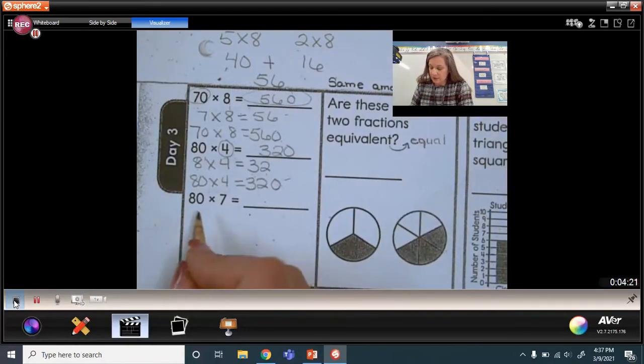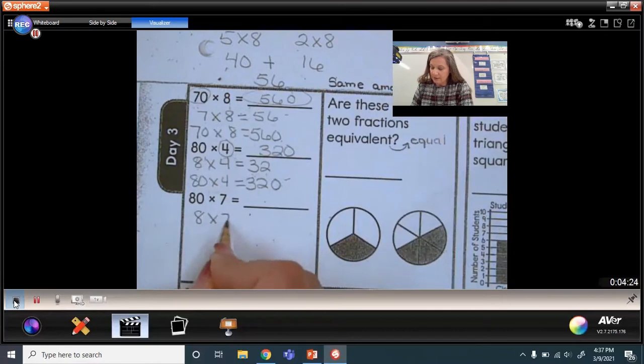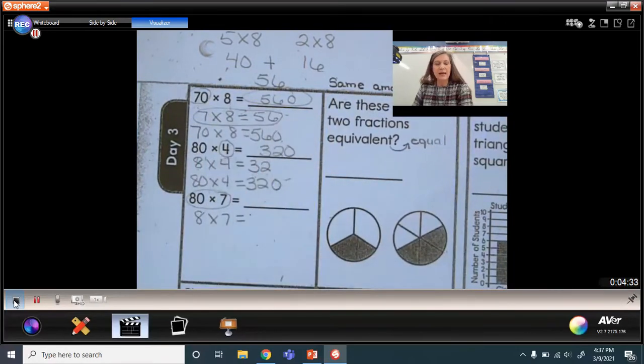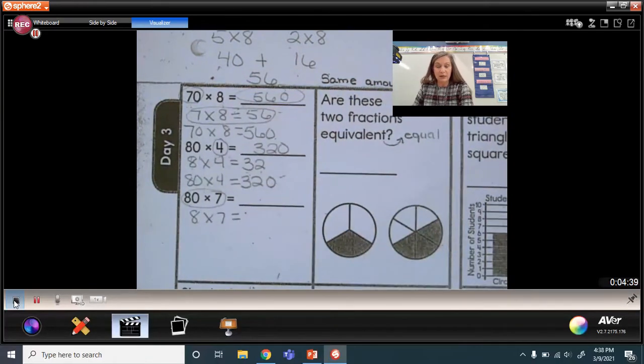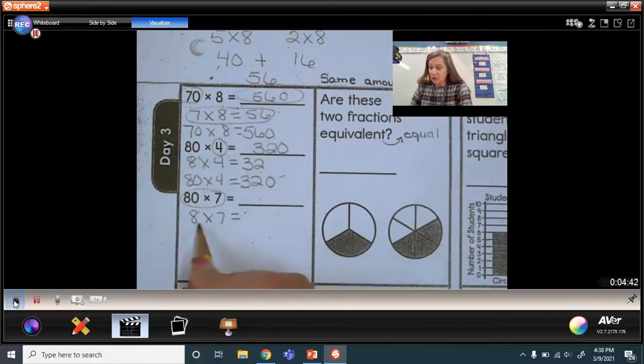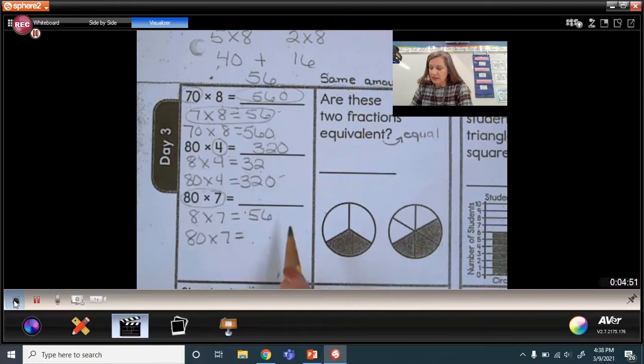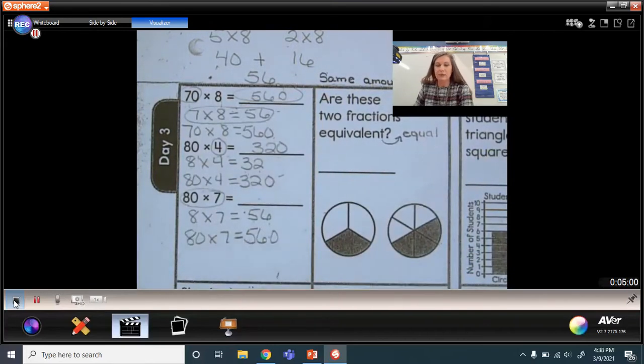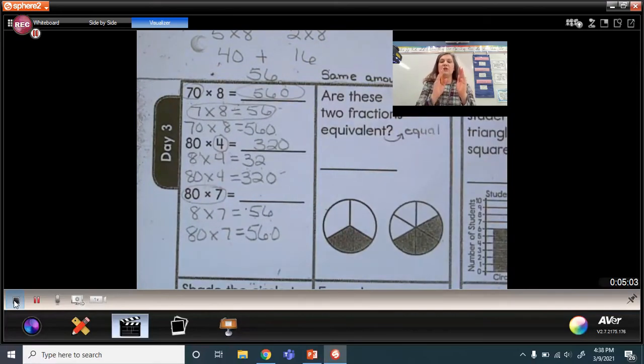The next problem is 8 times 7, or I can use 8 times 7 to help me with 80 times 7. So we just did 7 times 8 up here. This should be the same product, right? Because of the fact that I have 7 groups of 8 should be the same as 8 groups of 7. So this is going to be 56. So again, if I multiply each one of my digits 10 times more, this 6 becomes 60, and that 50 becomes 500 because I'm multiplying it by 10.